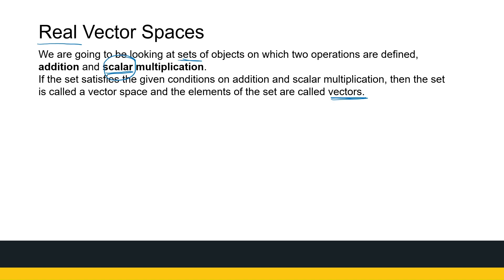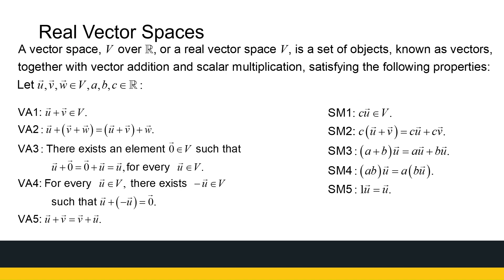Let's look at these conditions, because it's quite a lengthy list. Depending on the text you're using, the conditions are the same for a real vector space — they may be arranged or named a bit differently — but these 10 axioms are all we need for a vector space. So a vector space V over R, or a real vector space, is a set of objects (called vectors) together with vector addition and scalar multiplication, satisfying the following properties for any vectors and scalars A, B, and C.